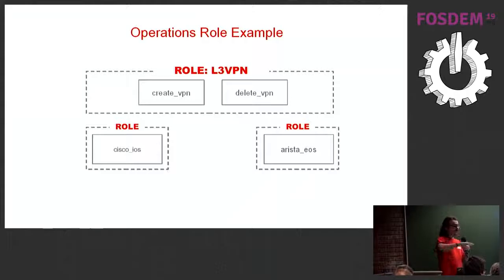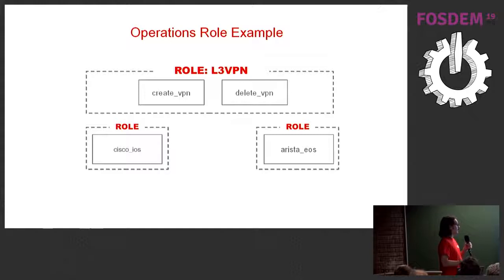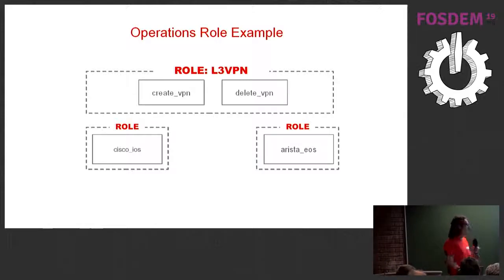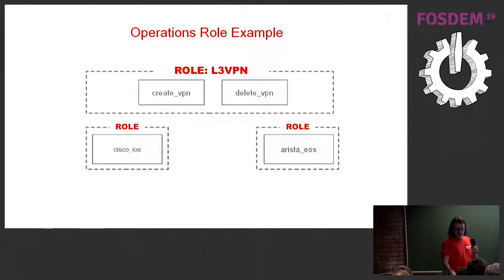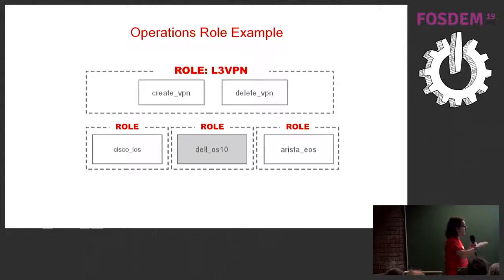The demo is about creating an L3VPN between two endpoints, two routers. The function role is simply to create or delete a VPN — something everyone understands without caring about implementation details. The implementation details are in the provider roles. Imagine a lab with heterogeneous hardware — Cisco, Juniper, and a new vendor like Dell. The vendor just needs to provide a provider role for that function role. The abstraction means the user doesn't need to care about implementation details.